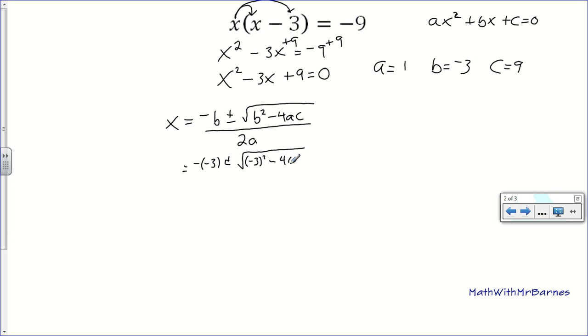Minus 4, a is 1, c is 9. I'll divide it by 2, and then a is 1. So I get my negative, negative 3. Well, that's just 3. Plus or minus the square root. And that's going to be 9 minus, this guy looks like it's 36, all over 2.